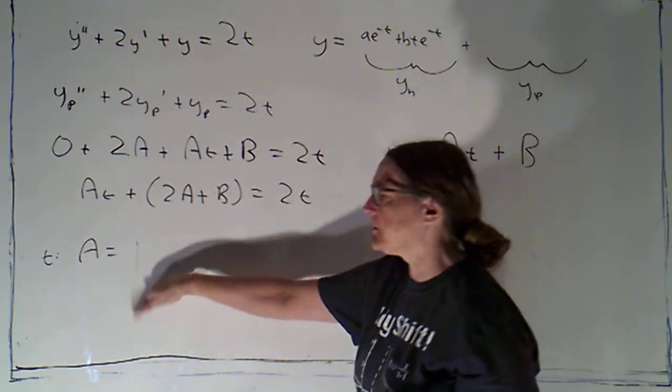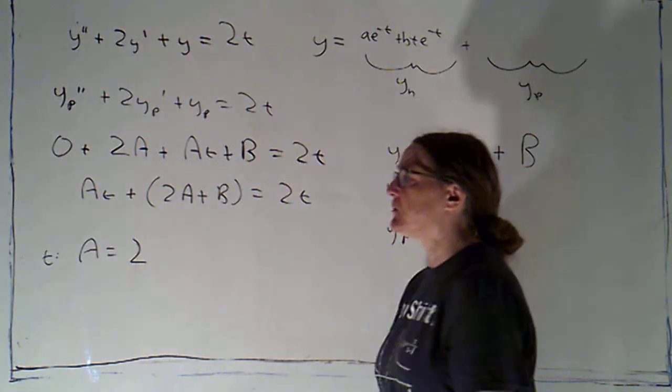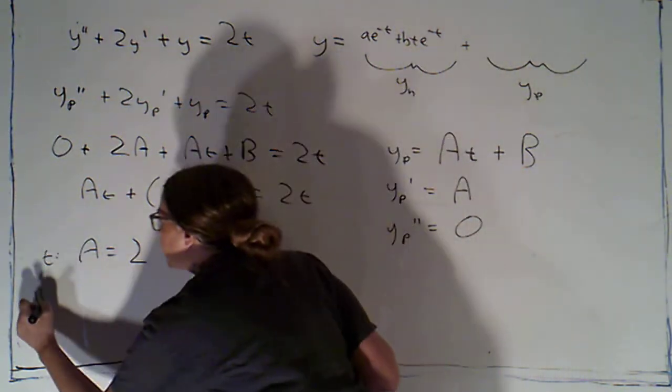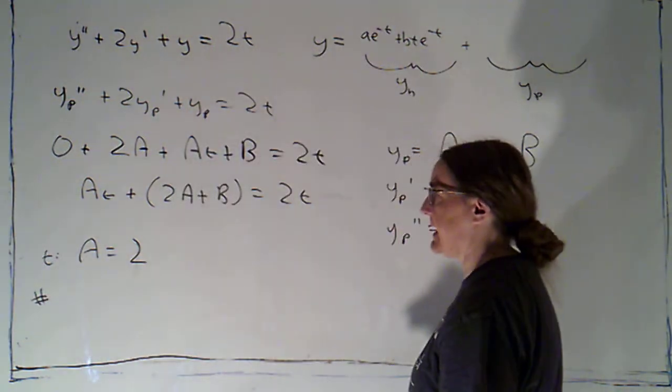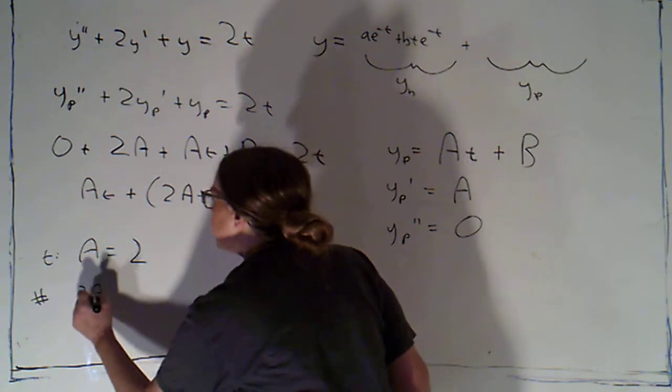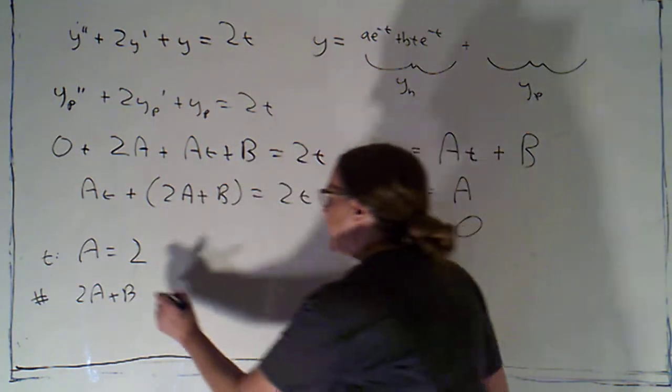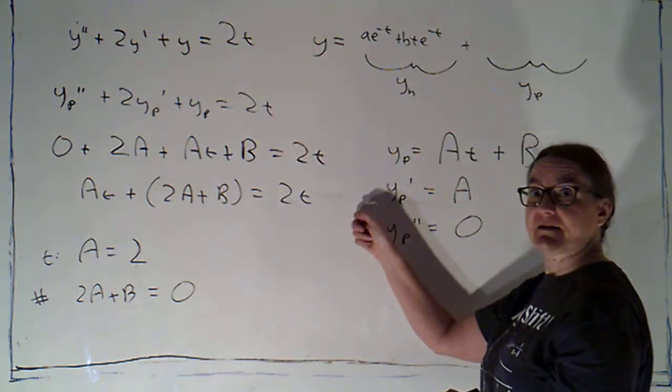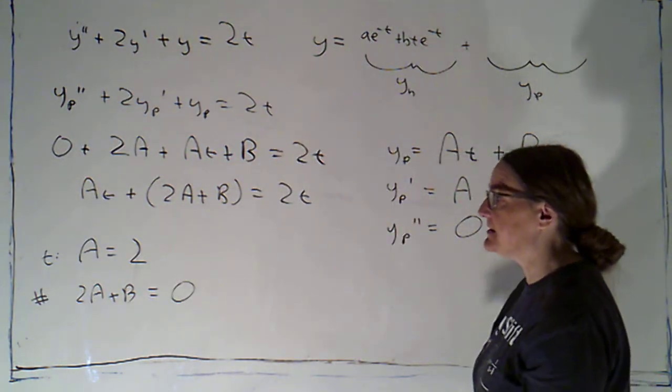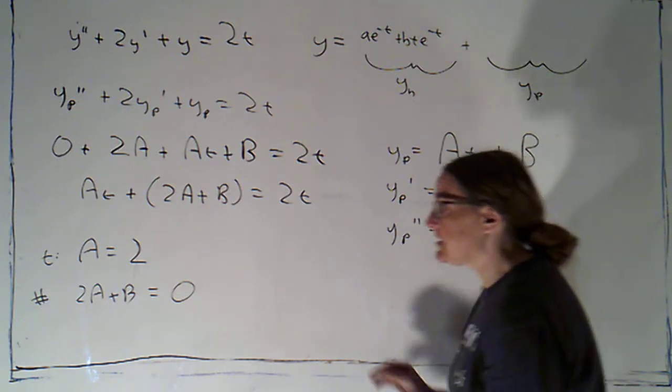I don't know why I wrote a equals 1. I meant to write a equals 2. The constant also has to be the same. So 2a plus b, which is the constant that I have on the left side, has to equal zero. Because there's a zero constant on this side. Now I already know that a is 2.